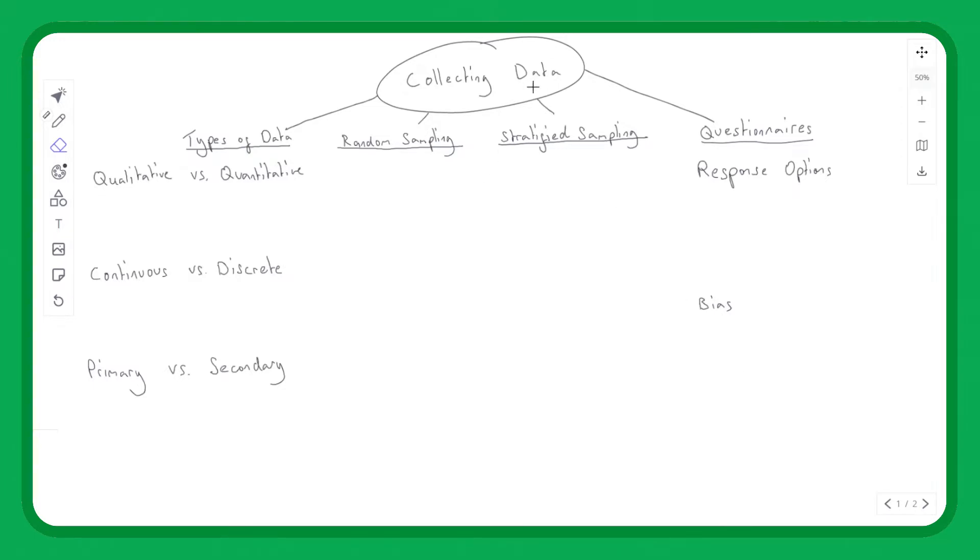We're looking at collecting data. There are four topics we'll cover: types of data, random sampling, stratified sampling, and questionnaires. The first topic is types of data. We've got three different categories we can use to define different types of data.